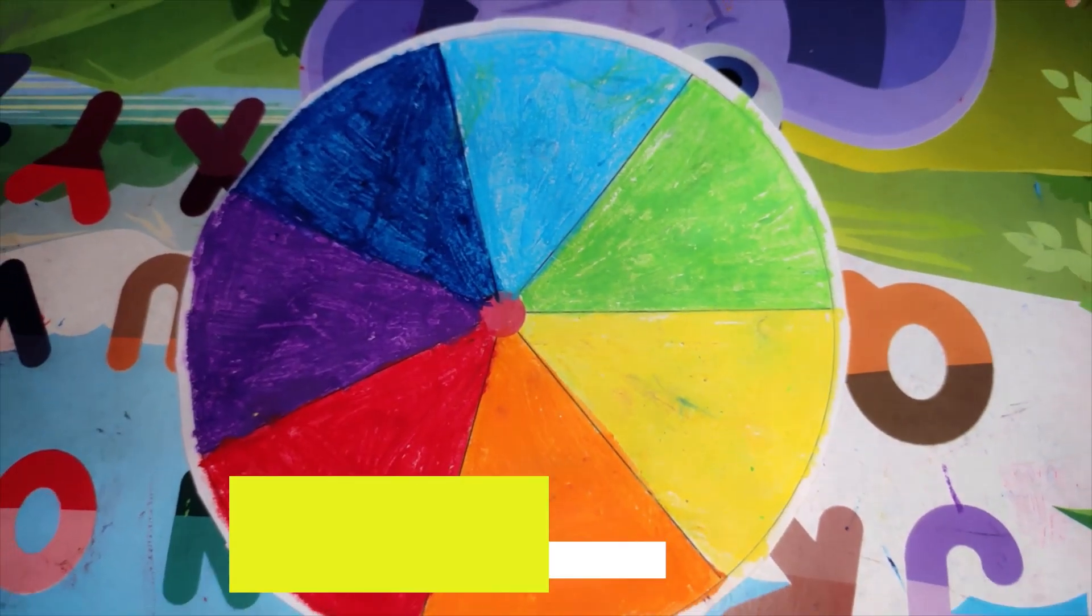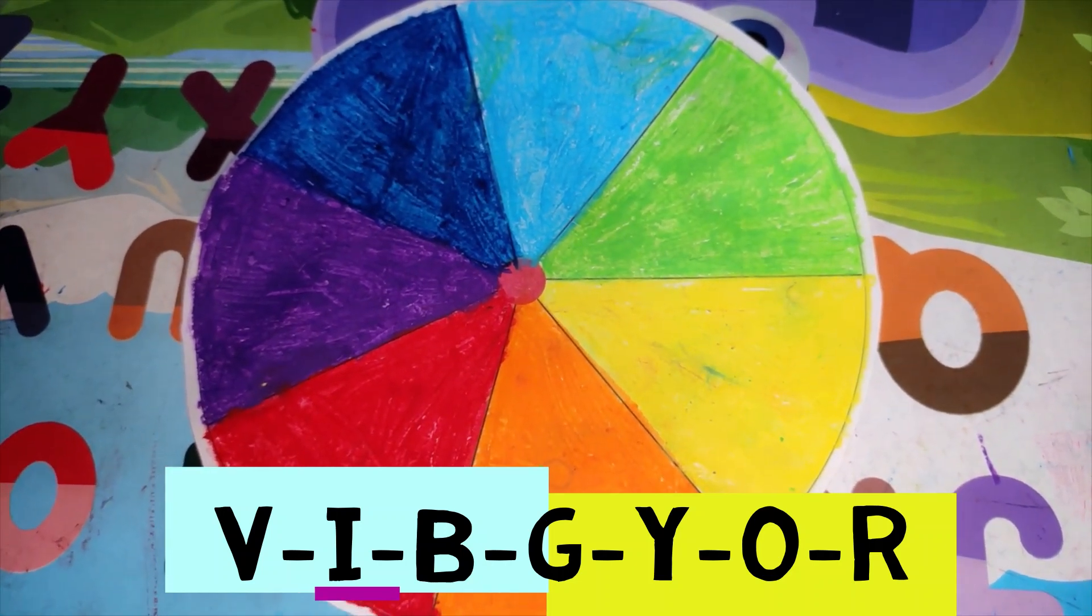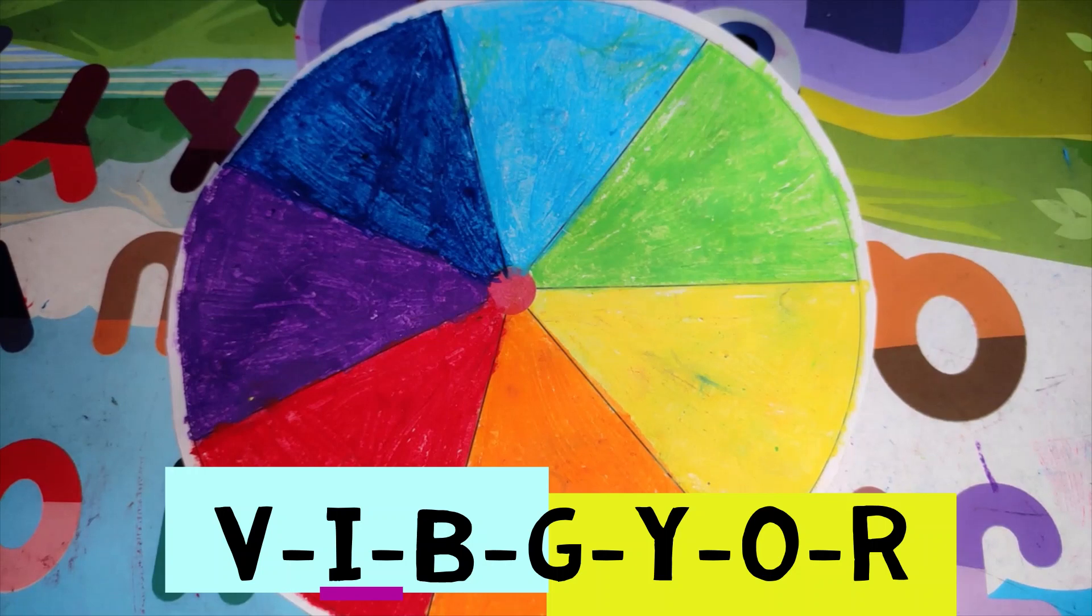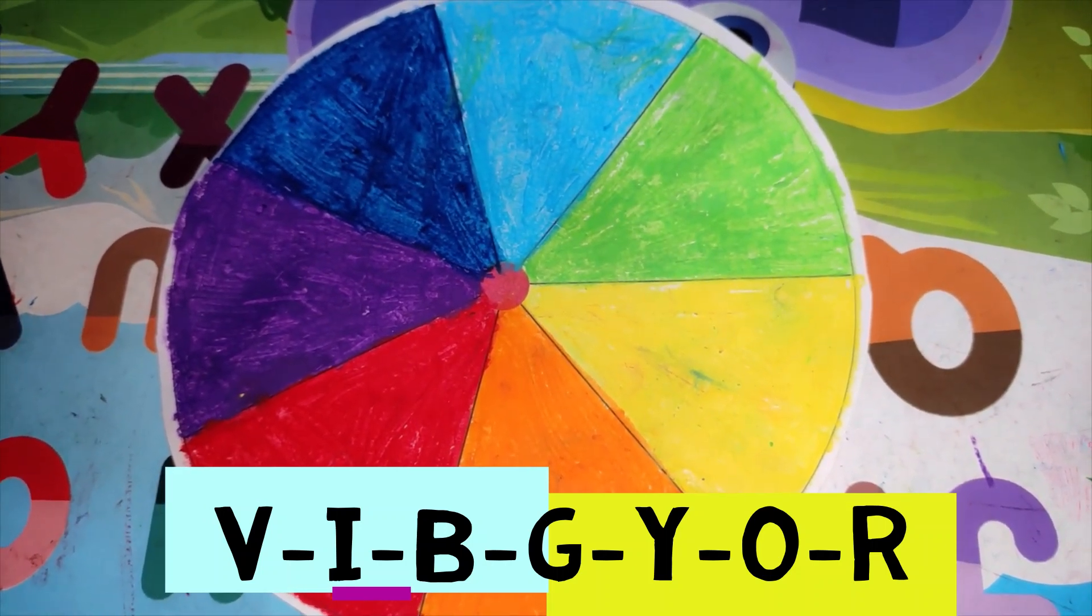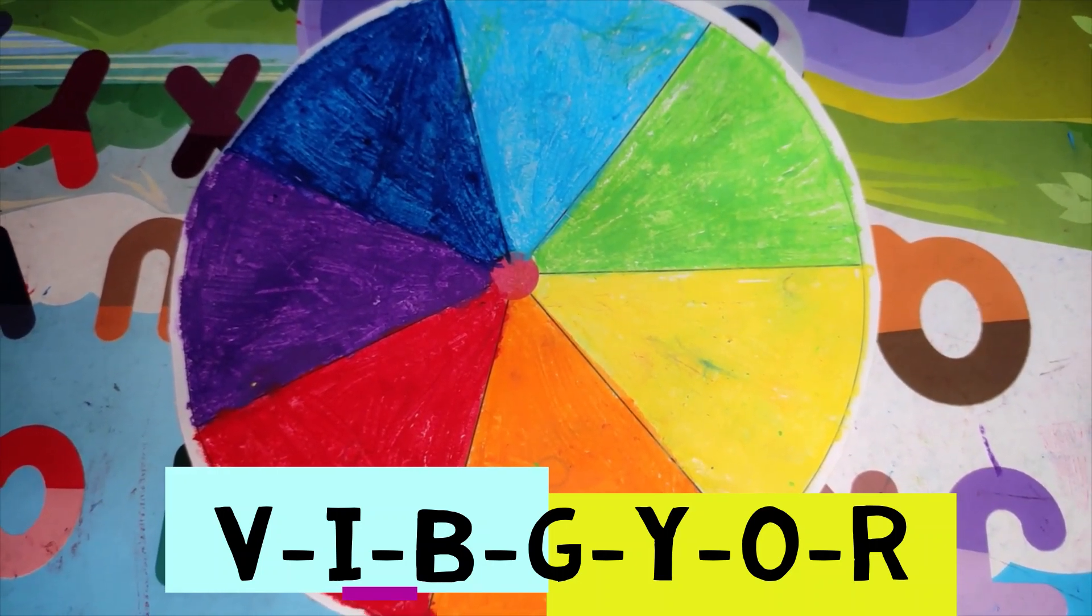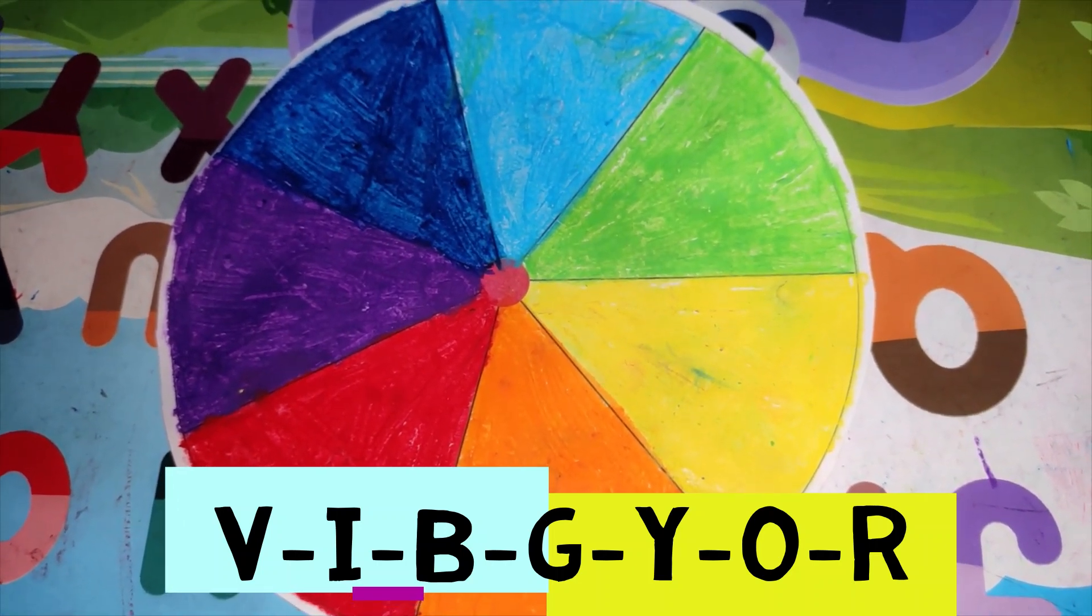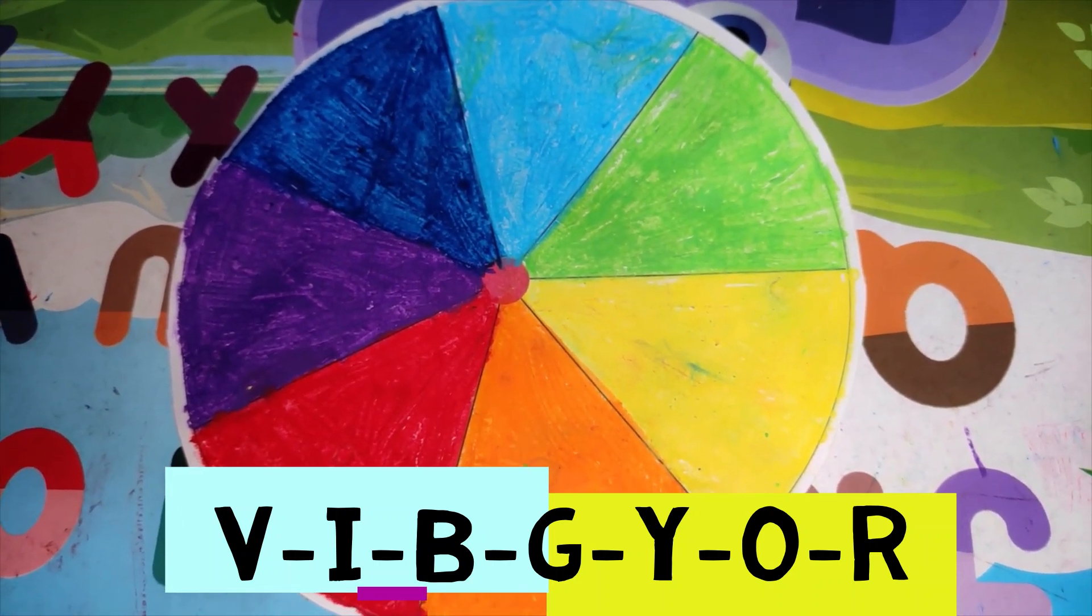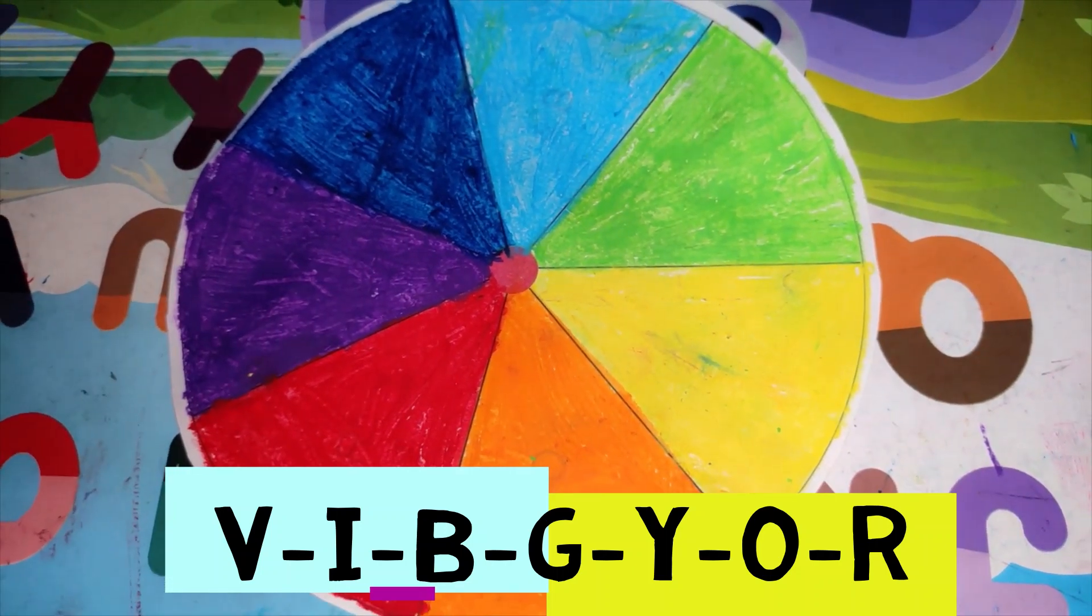There are seven colors in a rainbow, and I can name them all: violet, indigo, blue, green, yellow, orange, red - VIBGYOR.